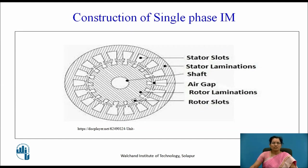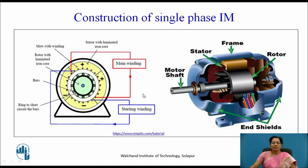Let us discuss the construction of the single-phase induction motor. Basically, this motor contains a stator and rotor. You can see here, these are the stator slots in which the stator winding is placed. The stator is made up of laminations. This is the shaft, and this is the air gap in between stator and rotor. This is the rotor, and the rotor laminations are used to reduce the eddy current losses. You can see here, the rotor slots are there in which the winding is placed. You can see in this diagram, this is the stator part, this is the rotor part, this is the outer frame of the motor, and the motor shaft is there.